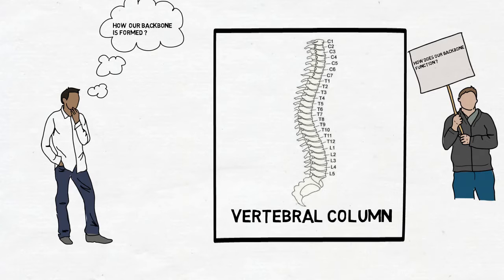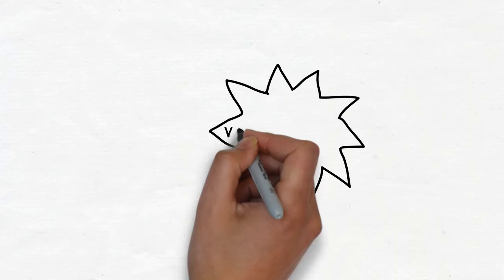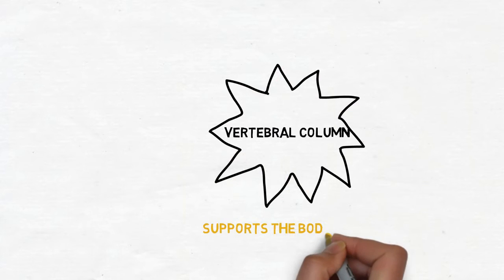As you can see there are some letters written along with the numbers. These are different types of vertebra which unite together to form our backbone or to be more precise the vertebral column. To understand about the vertebral column we need to know certain points. Firstly, the vertebral column supports the body weight. Secondly, it is the central axis of the body.